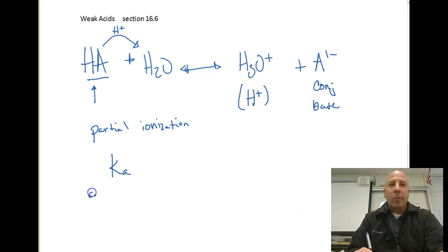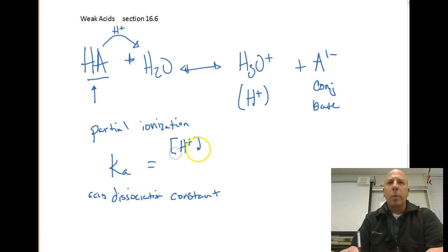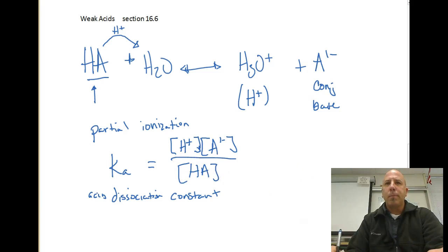Now, a Ka expression is going to be our acid dissociation constant, and it's going to take the same form as all of our other equilibrium constants. We've already talked about Kc, Kp, now we're talking about Ka. So this dissociation constant is going to be written as our products, the concentration of H+ multiplied by our conjugate base A-, all over the concentration of our weak acid HA.